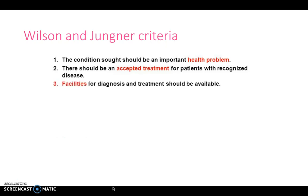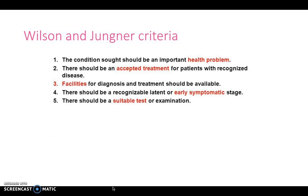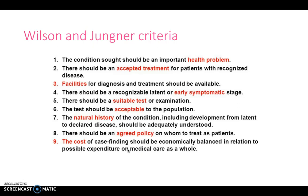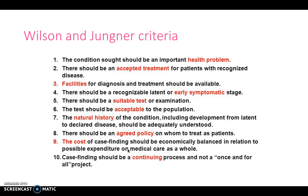Further Wilson and Jungner criteria include: facilities for diagnosis and treatment must exist; there should be recognisable latent or early symptomatic stages; there should be a suitable test or examination with good specificity and sensitivity; the test should be acceptable to the population. The natural history of the condition, including its development, should be adequately understood. There should be an agreed policy on who to treat. The cost of case finding should be economically balanced against the overall expenditure on medical care. Finally, case finding should be a continuing process, not a one-off.